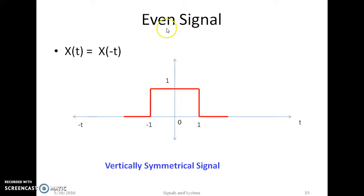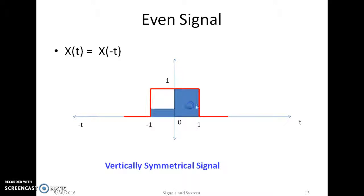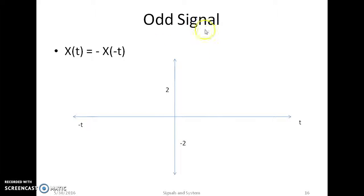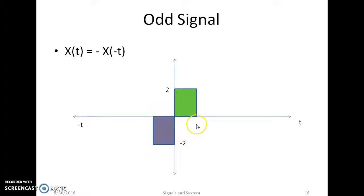Another category is even signal and odd signal. A signal x(t) is said to be even when it satisfies x(t) = x(−t), meaning the values on the right-hand side are equal to those on the left-hand side — it is vertically symmetrical. A signal is said to be odd when it satisfies x(t) = −x(−t).